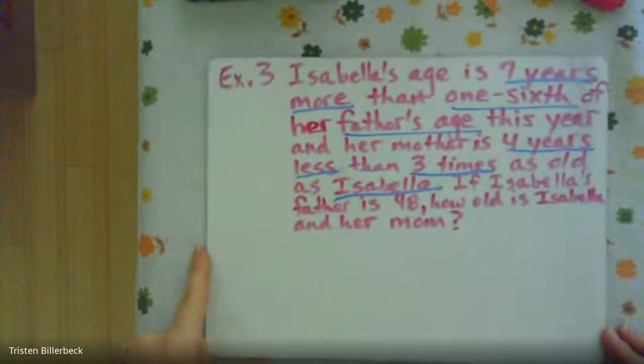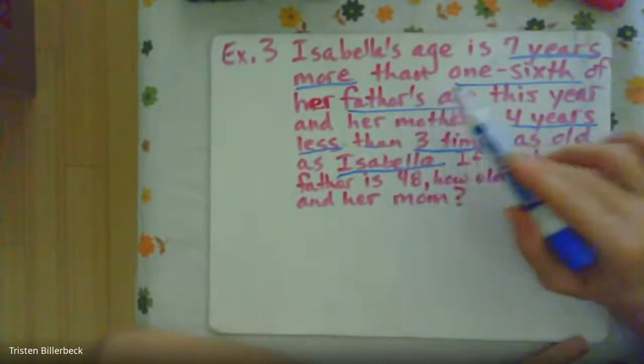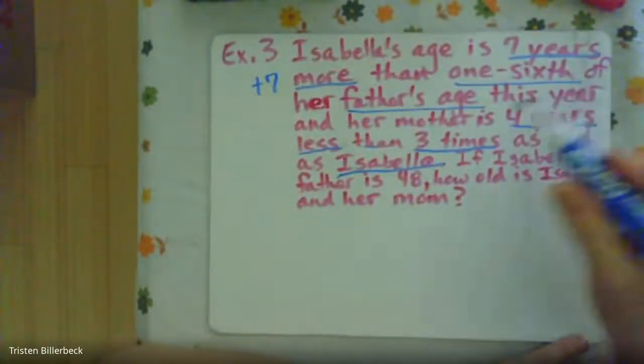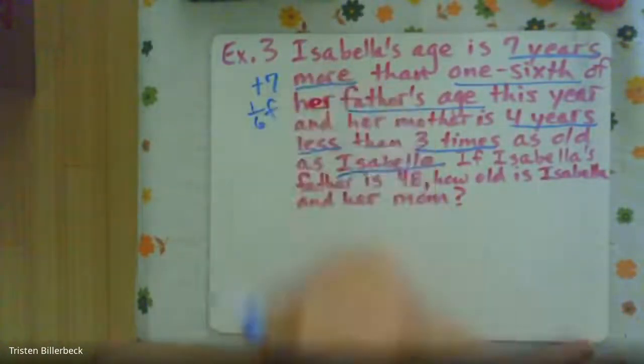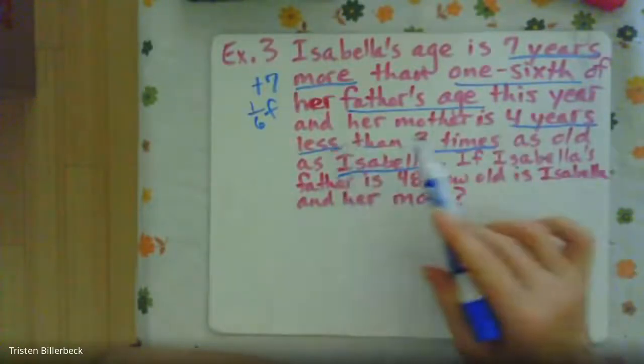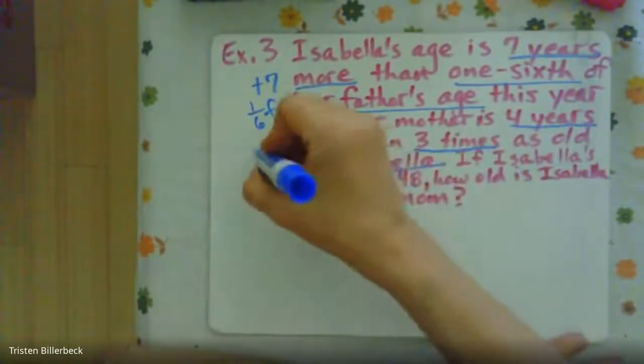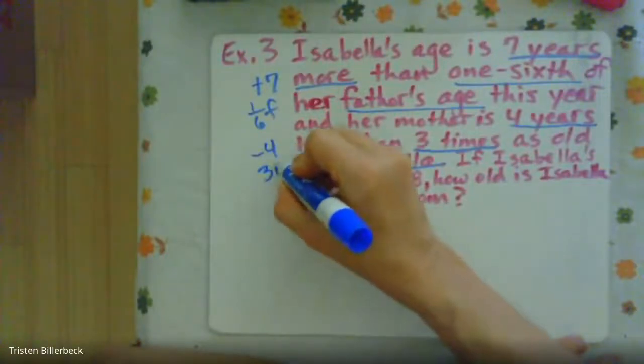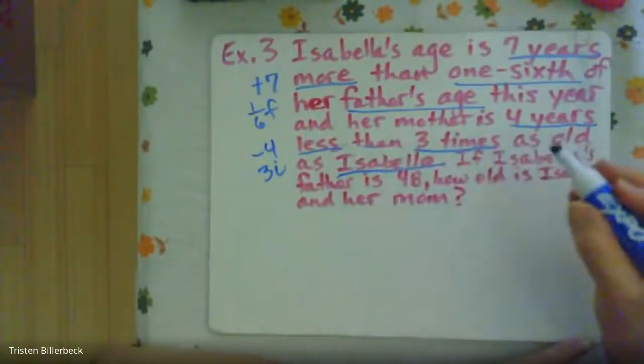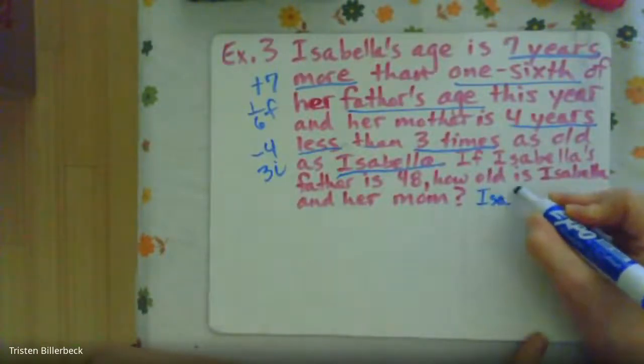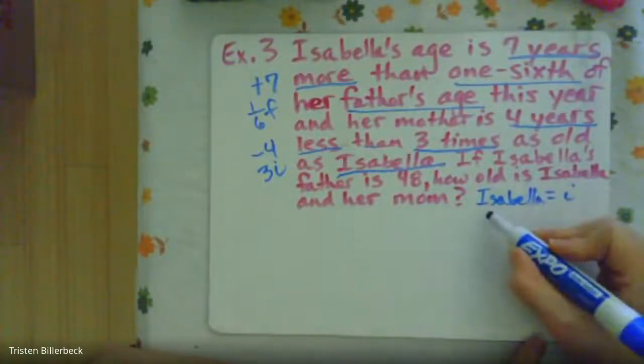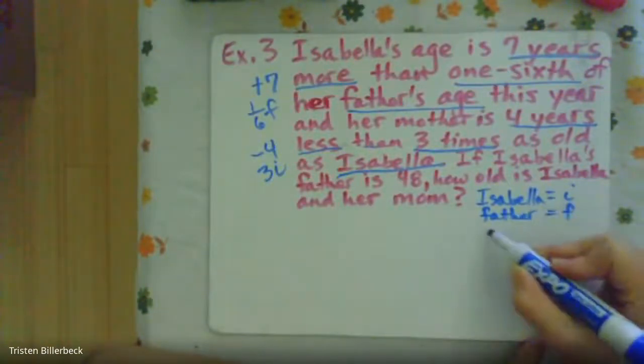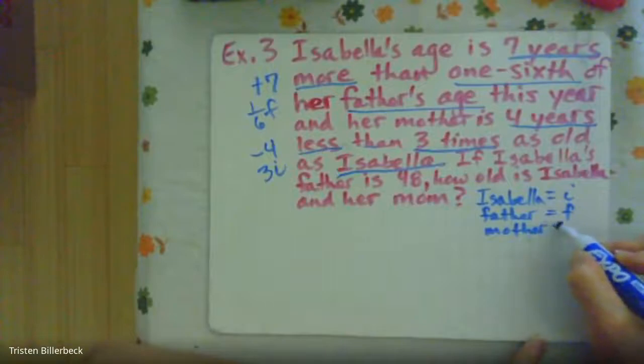All right, let's look at this one. So we have Isabella's age is seven years more, so seven years more is plus seven, then one-sixth of her father's age this year. And her mother's age is four years less, that's minus four, then three times as old as Isabella. So that's three-I. So if Isabella is I, the father equals F, and the mother equals M.